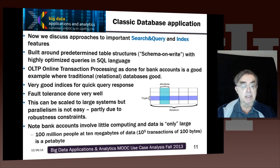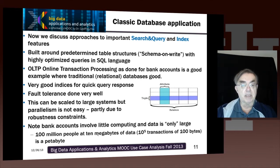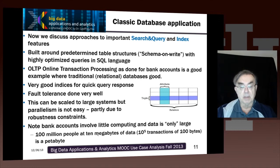Traditional databases can scale, but they can't scale to the size that NoSQL can. These optimization and fault tolerance algorithms do not have scalable parallelism. For bank accounts, I estimated it could be up to a petabyte — if there were 10 to the fifth transactions each of 100 bytes, stored over many years, and with 100 million people, you get a petabyte.